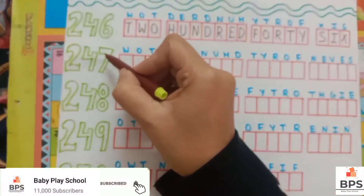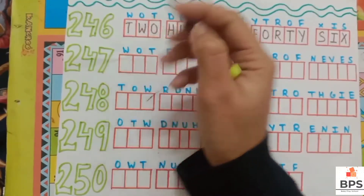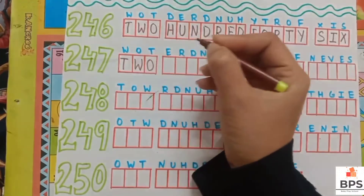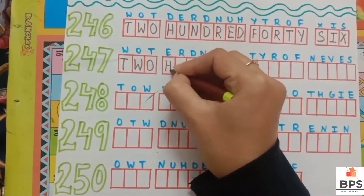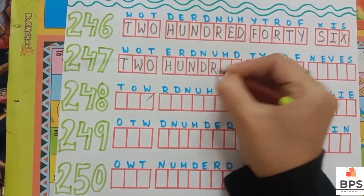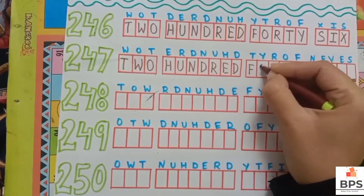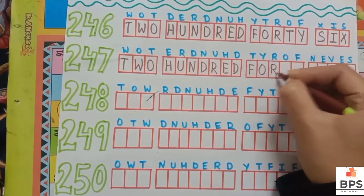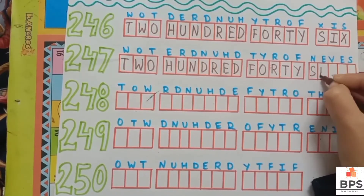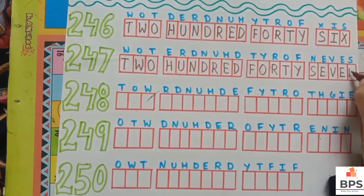Two hundred forty six, two hundred forty seven — 247. T-W-O, 2; H-U-N-D-R-E-D, 100; F-O-R-T-Y, 40; S-E-V-E-N. Two hundred forty seven — 247.